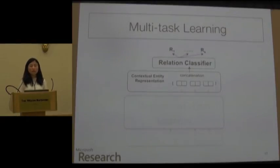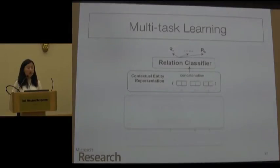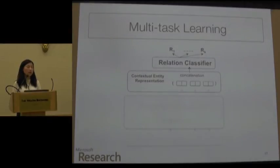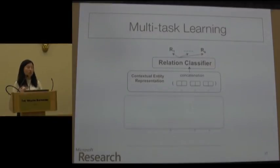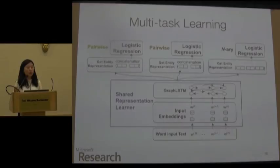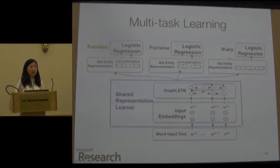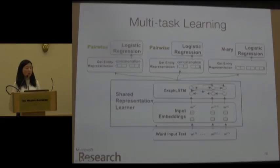Now I want to give you a flavor of the multi-task learning aspect. Multi-task learning is motivated by the observation that each n-ary relation can be decomposed into several pairwise relations. If you can make correct predictions on the pairwise relations, you will do well on the n-ary relation. In our example, when we consider the drug-gene-mutation ternary relation, we can decompose it into drug-gene and drug-mutation relations. All relation extractors share the same Graph LSTM representation learner but have their own relation classifiers.